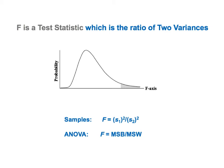ANOVA uses special types of variances, MSB and MSW. MSB is the mean sum of squares between, and MSW is the mean sum of squares within. And in ANOVA, F equals MSB divided by MSW.